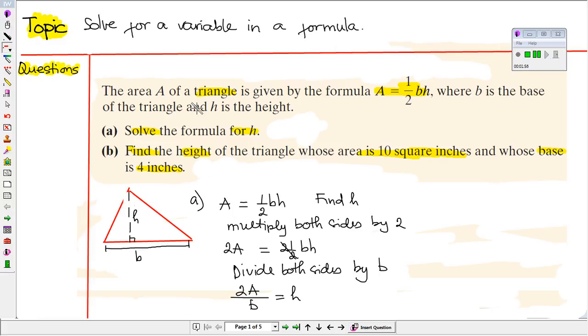Now part b. We want you to use the formula of the height that you just found to find the height, given the area is 10 square inches and the base is 4 inches. Then we have the formula for the height is 2A divided by b. So this will be 2 times 10.